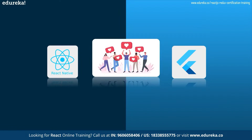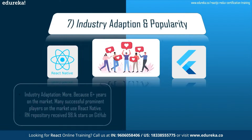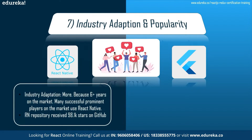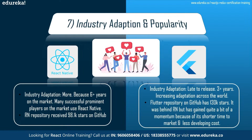Next: industry adaptation and popularity. Since React Native came out two years before Flutter, many successful prominent players on the market use React Native to build apps. The React Native repository on GitHub received 98.1 thousand stars. Flutter was late to the party, but it has been seeing increasing adaptation and its repository has reached a whopping 130 thousand stars, surpassing React Native. Flutter has gained quite a bit of momentum because of its shorter time to market and lower development cost.